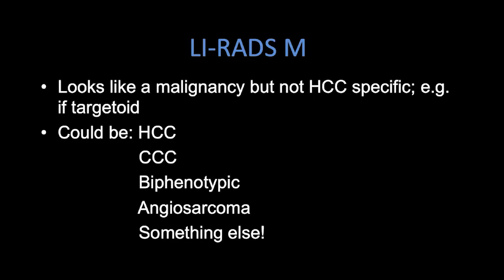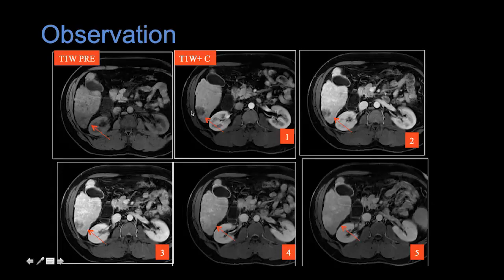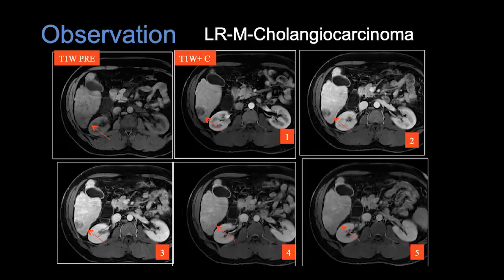LIRADS-M basically says: I am a malignancy, but I am not definitively HCC. It could be an HCC, could be a cholangiocarcinoma, could be a biphenotypic tumor, could be an angiosarcoma or something else. We need to say we don't know, but we're very concerned this represents malignancy. In another patient with the same concept in a cirrhotic liver, we have a focus of abnormal signal intensity in segment six on T1 and T2, with rim-like progressive enhancement that completely fills in on delayed phase — imaging features that do not meet diagnostic criteria for HCC. This is also a patient with a cholangiocarcinoma.